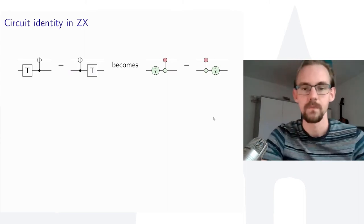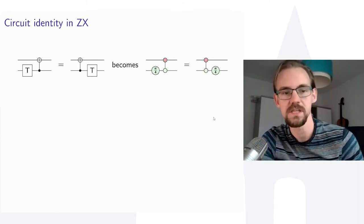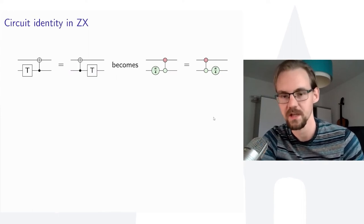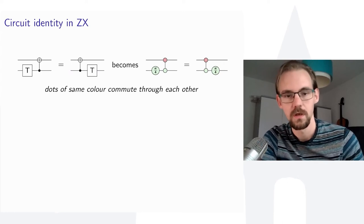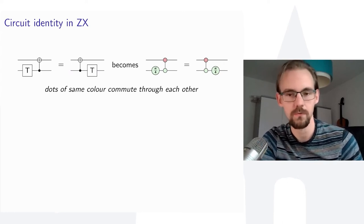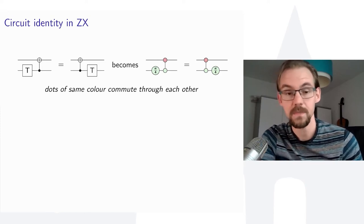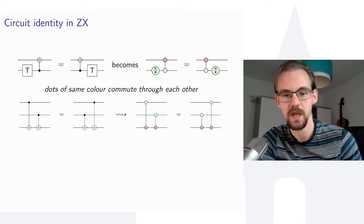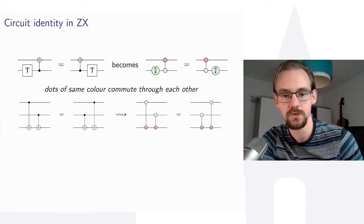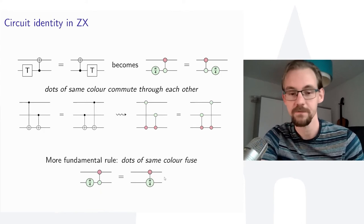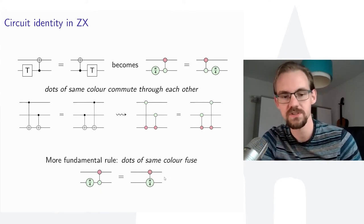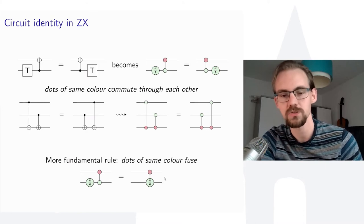Why would you want to do this translation? Consider the commutation rule that a T gate can go through the control of a CNOT. In ZX, this becomes a specific graphical identity. The nice thing is that this is part of a pattern: dots of the same color commute through each other. So once you have this single meta-rule, many identities follow for free — for instance, CNOT gates targeting the same qubit also commute, since they are the same color.